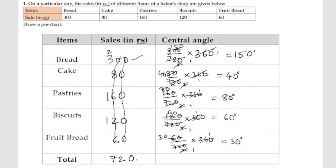Let us see: 150 plus 40 is 190. 190 plus 80 is 270. 270 plus 60 is 330. 330 plus 30 is 360 degrees. This is the total angle. Now we will draw a pie chart.